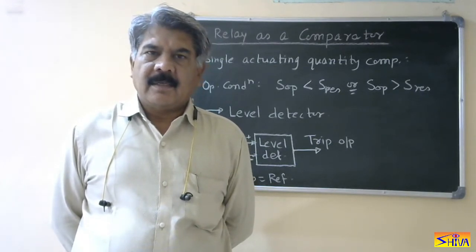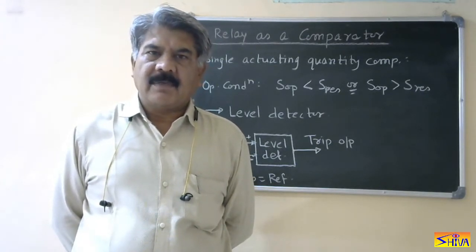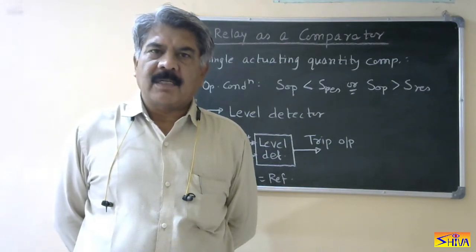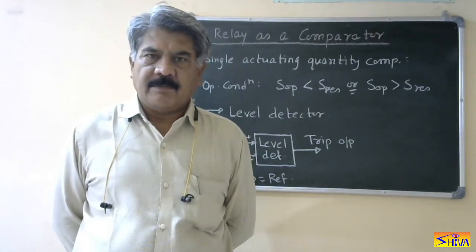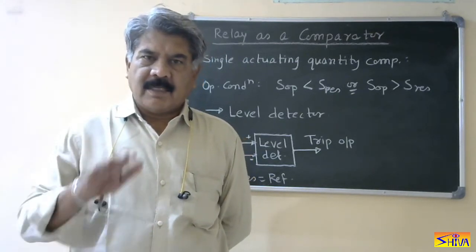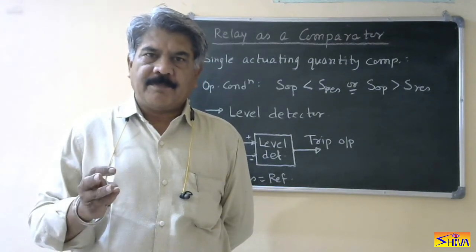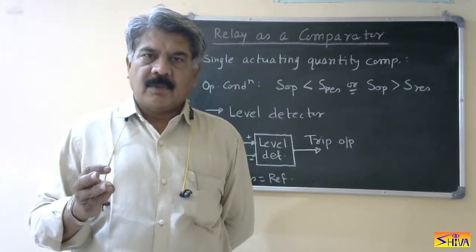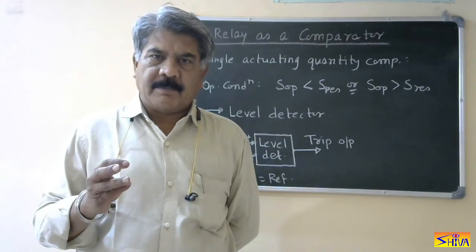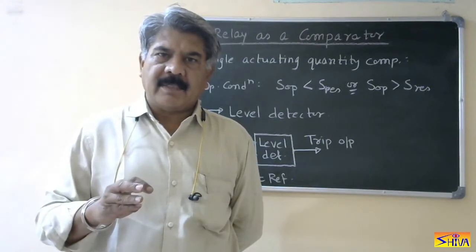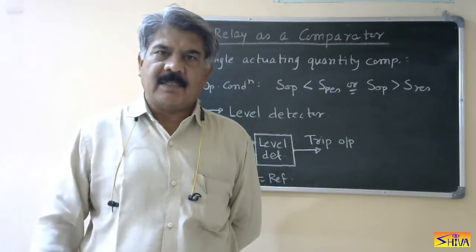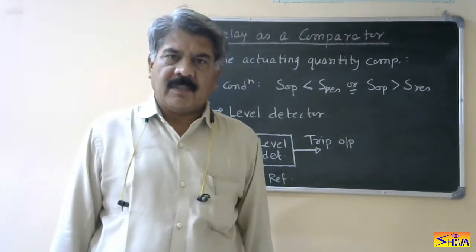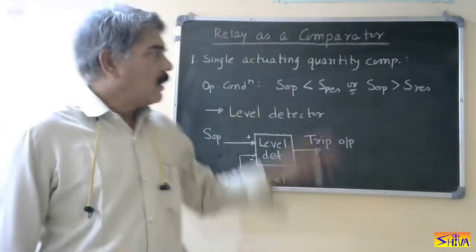The definition is: a relay is a device which detects the abnormal condition in a power system by constantly measuring certain electrical quantities which are different during fault condition. So, a relay basically acts as a measuring device and comparing device. It performs the function of measurement and then compares the operating quantity with a certain reference. Because this operating quantity changes during fault condition, the relay is nothing but a comparator.